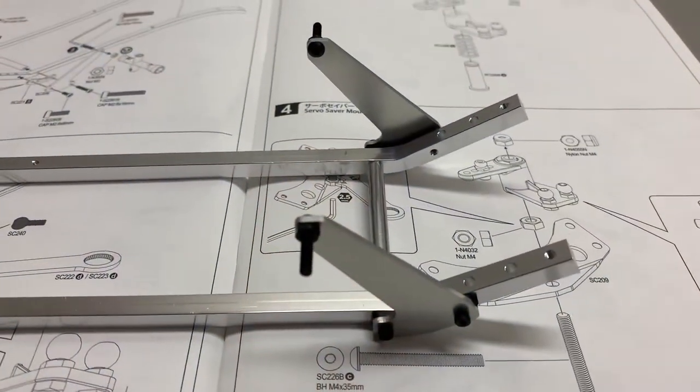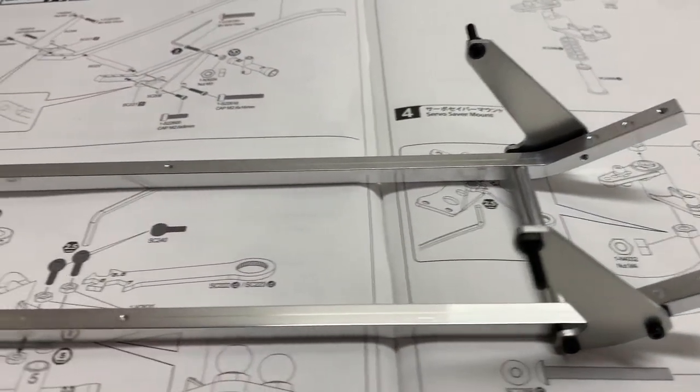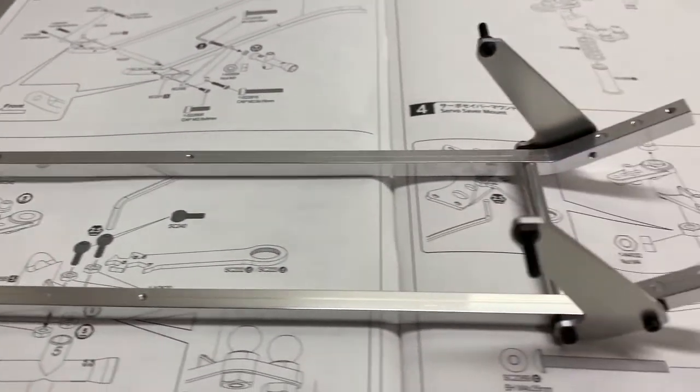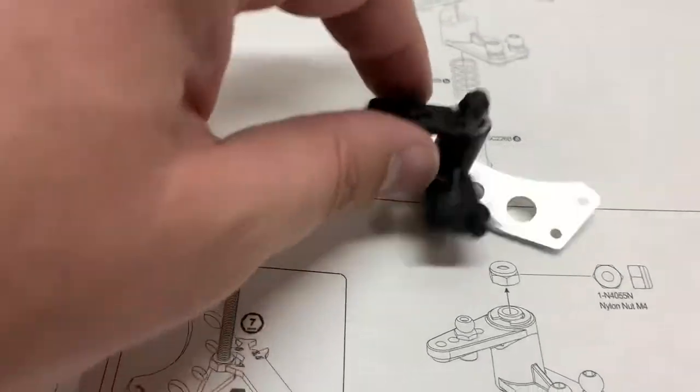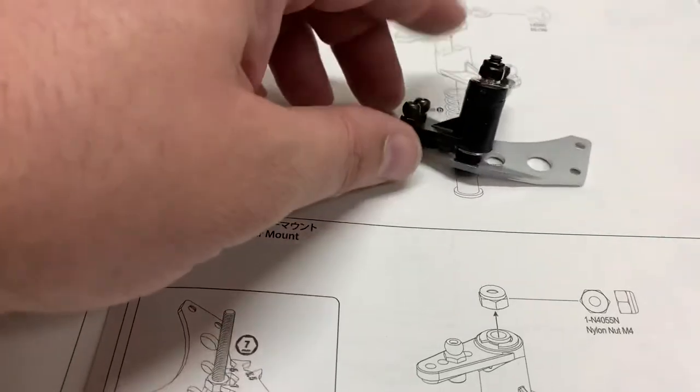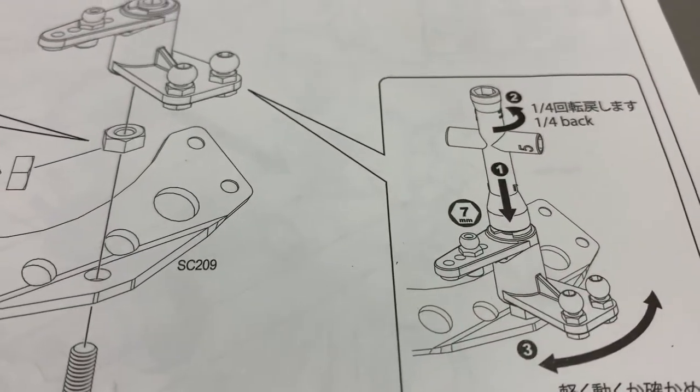So here's step one. Just kind of putting some of the chassis rails together. Here's the finished servo saver and servo saver mount. Just want to make sure that this moves freely. They kind of show that you tighten it down and then go one quarter turn back.